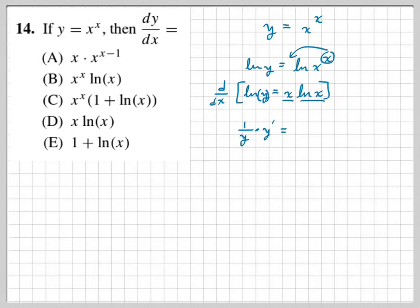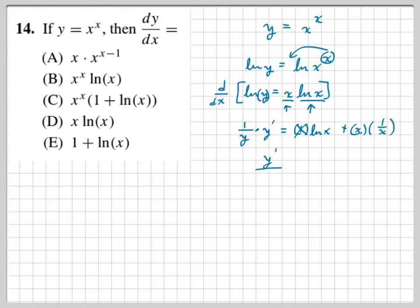On the right side, we have two functions multiplying, so we use the product rule. The derivative of x is 1, times ln(x), plus x times the derivative of ln(x), which is 1 over x. So the right side simplifies to ln(x) plus x times 1/x. That gives y prime over y equals ln(x) plus 1, since x over x equals 1.